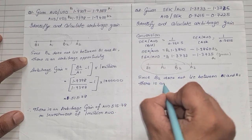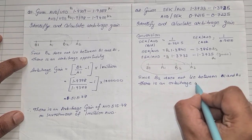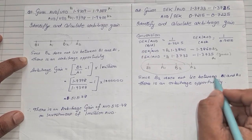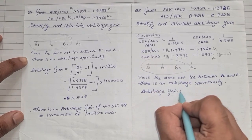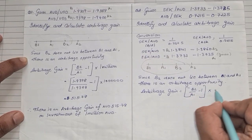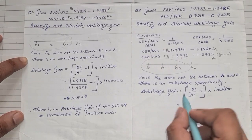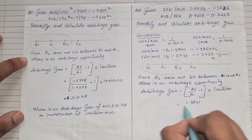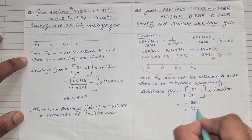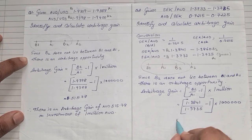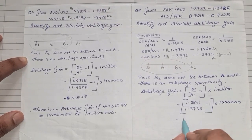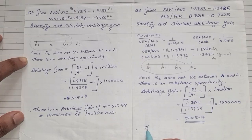Since b2 does not lie between b1 and a1, there is an arbitrage opportunity. Applying the formula: arbitrage gain = b2 upon a1, minus 1, into 1 million. Here b2 = 1.3841 and a1 = 1.3735. So: 1.3841 divided by 1.3735, minus 1, multiplied by 1 million. The answer is 7705.17.